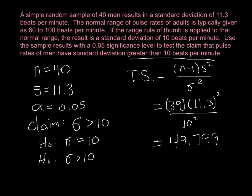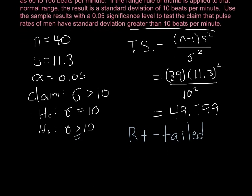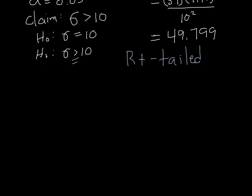We need to figure out: is this a right-tailed test, left-tailed test, or two-tailed test? Since our alternative hypothesis is written as greater than, we know that we are going to use a right-tailed test. Here's where this is a little bit different. If you remember back to chapter 7, when we used the chi-squared distribution, the numbers we get out of the table give us the area to the right, where in normal and t-distributions it gives us the area to the left. So since we're looking for a right-tailed test, we are just going to find the area to the right of 49.799.